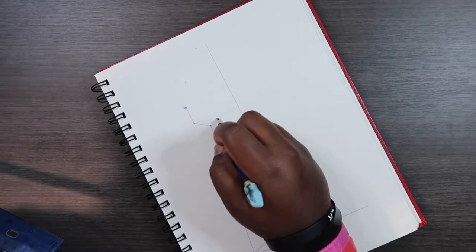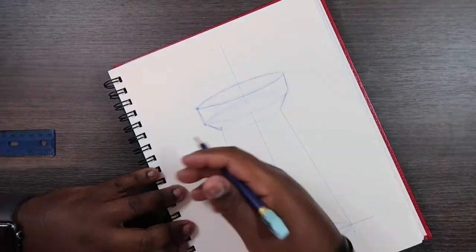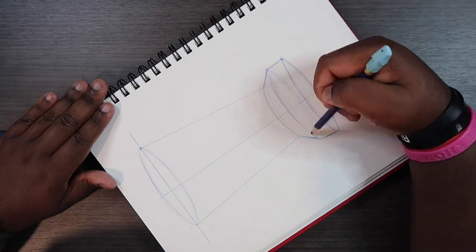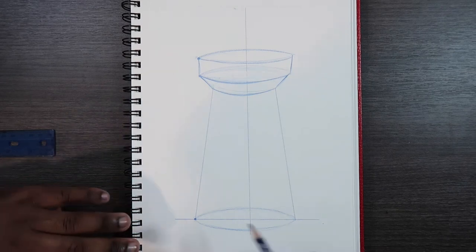So I'm going to just draw some ellipses. And since we got our line of symmetry, it works as kind of like a guide to help you make them symmetrical. And you should end up with something that looks like this.